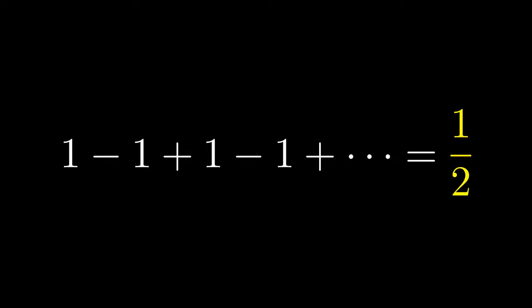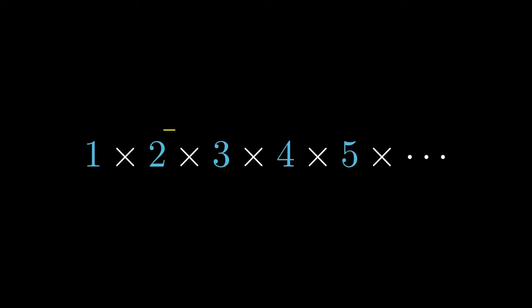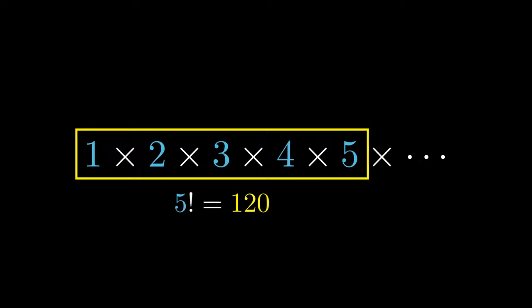This next equation also has the number half, but before we get there, let's start with the numbers 1, 2, 3, and 4. The number 1 times 2 is abbreviated by 2 factorial. This equals 2. The number 1 times 2 times 3 is abbreviated by 3 factorial, which equals 6. Likewise, 1 times 2 times 3 times 4 is abbreviated by 4 factorial, which equals 24.